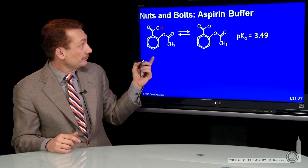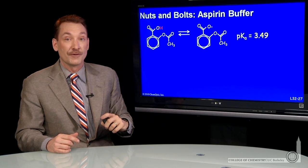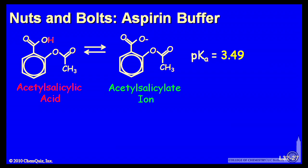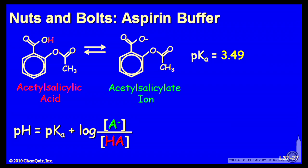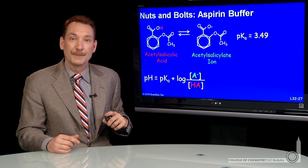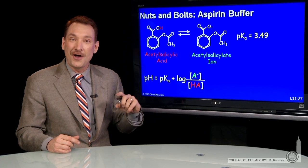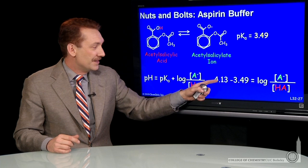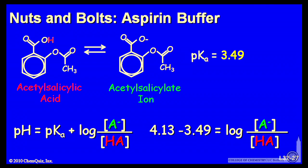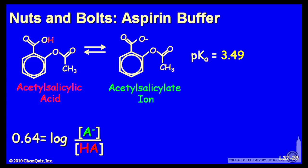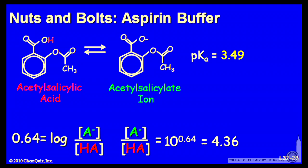Let's actually do the calculation. Here's the acid and the base form, pKa 3.49 — acetylsalicylic acid and acetylsalicylate ion. The Henderson-Hasselbalch expression tells us the ratio is governed by the difference between the pH and the pKa. In this case we know both, so we can solve for the ratio. pH minus pKa gives us 0.64, which equals the log of the base form over the acid form.